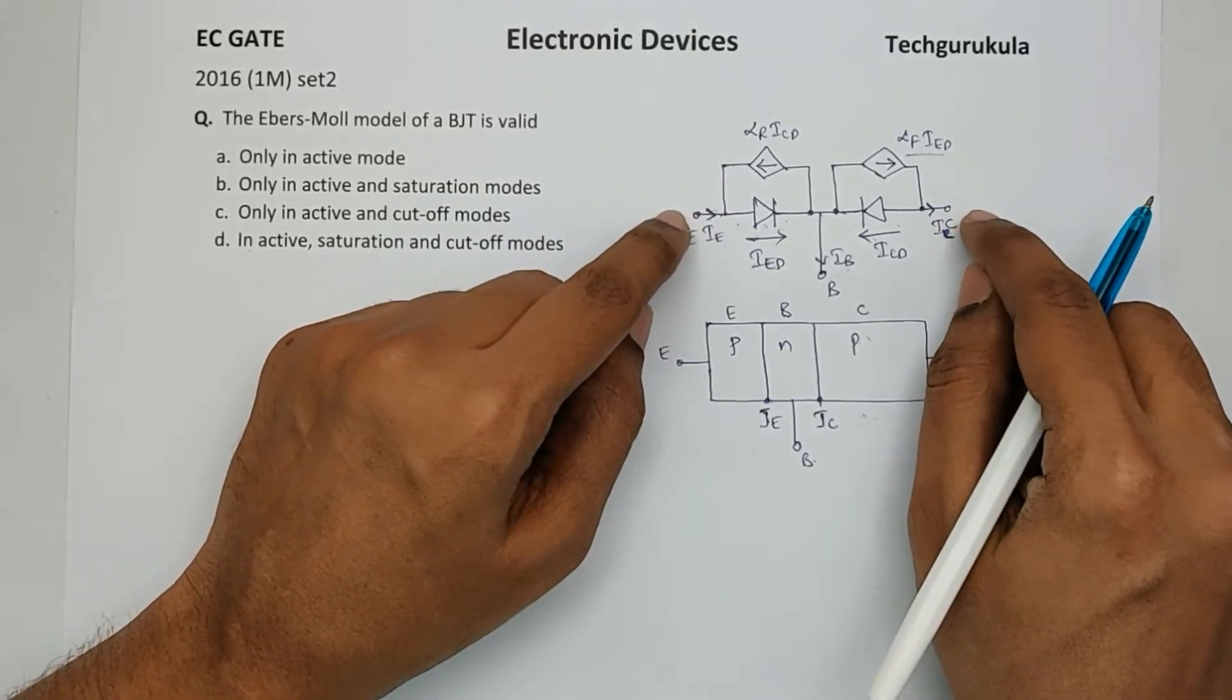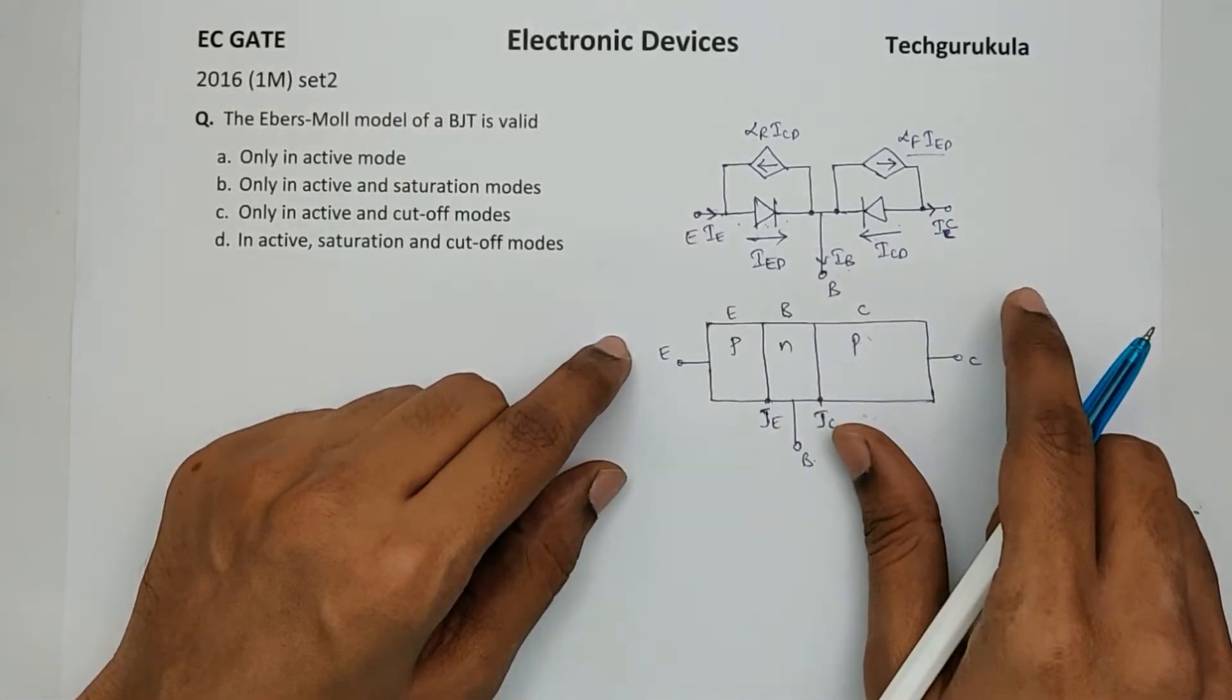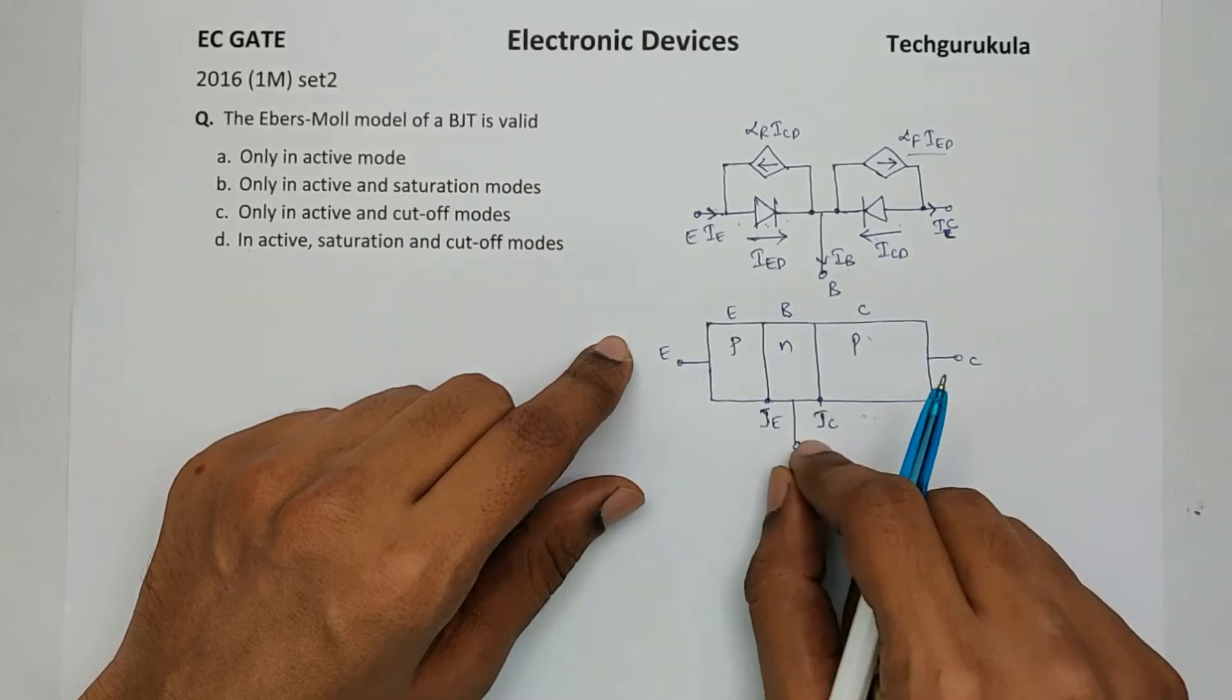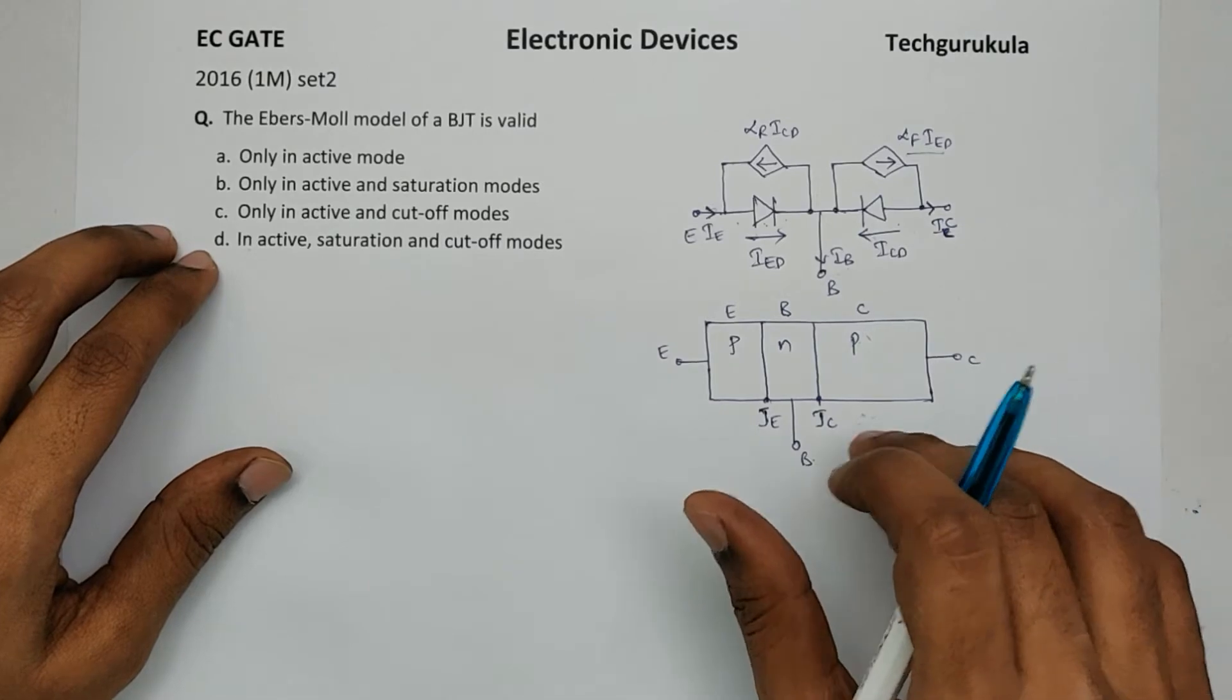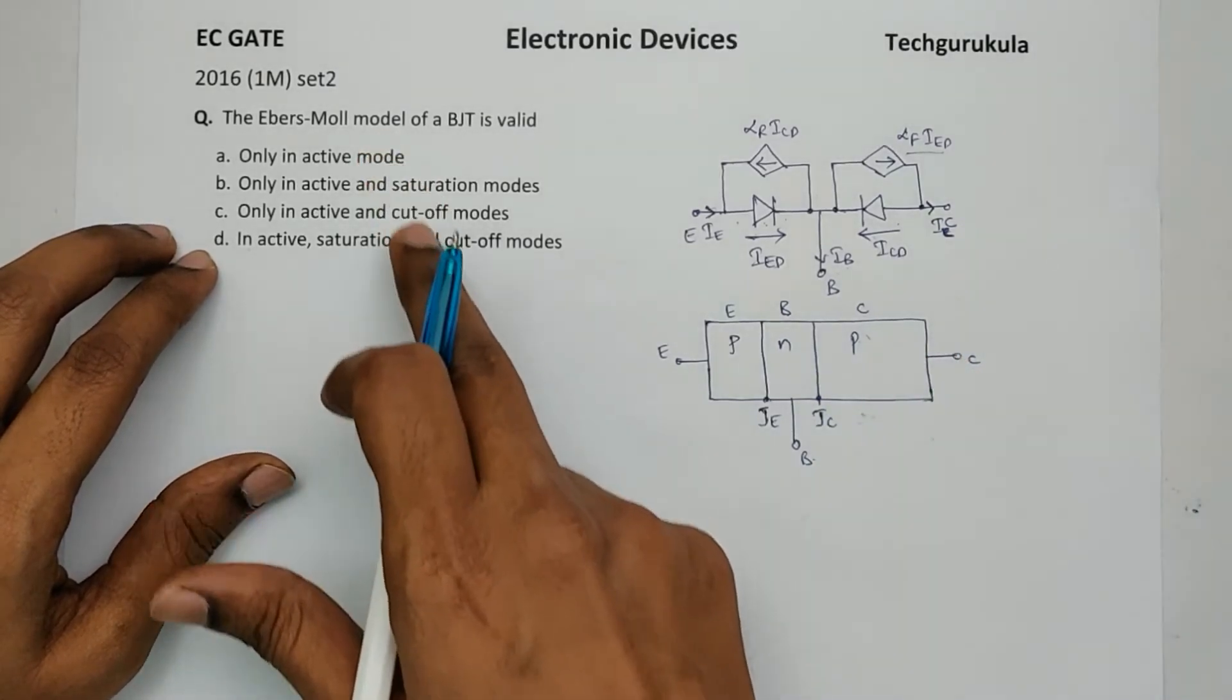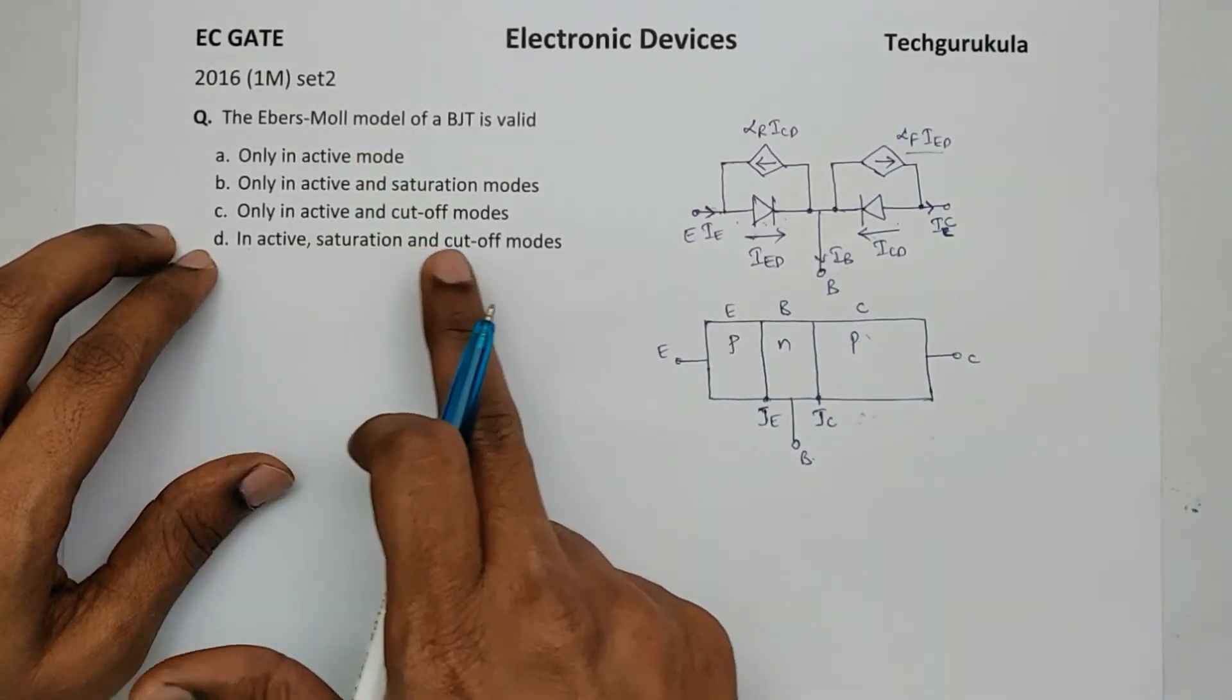In fact, this model completely represents in all the modes how a BJT operates. Hence the answer is this Ebers-Moll model actually models the BJT in all modes. Here they have given the highest is active, saturation, and cutoff.